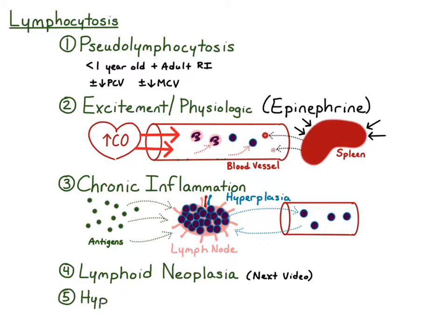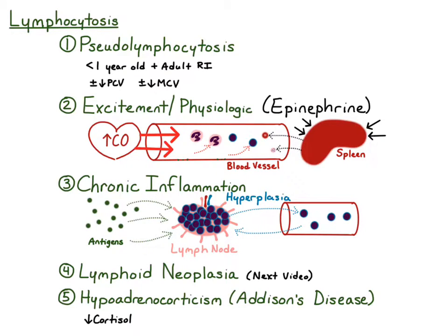The last cause of lymphocytosis is hypoadrenocorticism, also known as Addison's disease. This is a deficiency of cortisol and aldosterone that's normally produced by the adrenal cortex. The low cortisol causes the lymphocytosis because cortisol normally sequesters lymphocytes within the lymph node and causes lymphocyte cell death or lympholysis. Deficiency of cortisol leads to less sequestration in the lymph node and less lymphocyte cell death or lympholysis.